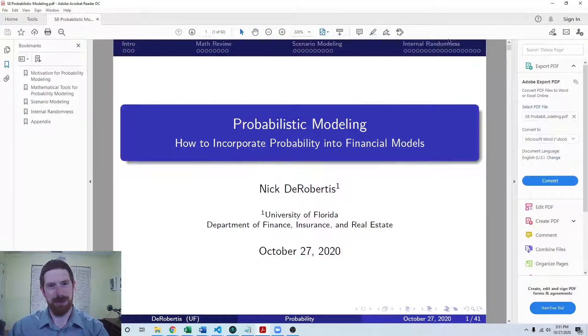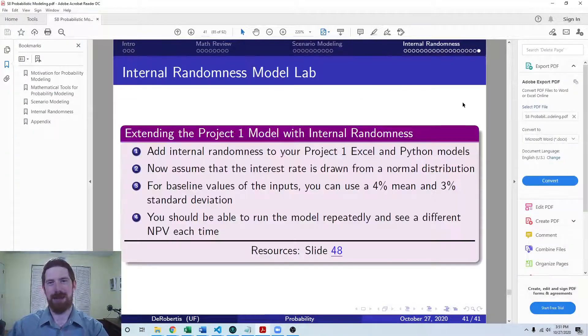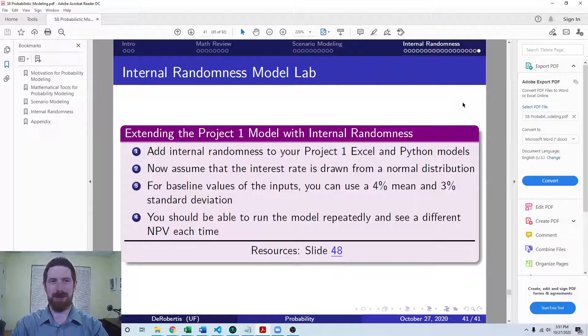We covered all the internal randomness material already, including examples of how to add it to Excel and Python models. The way we're going to wrap it up is for you to do the same with your own Project 1 Excel and Python models.